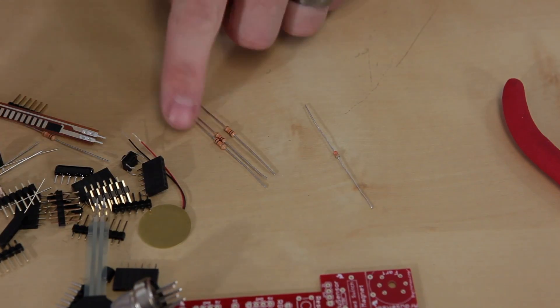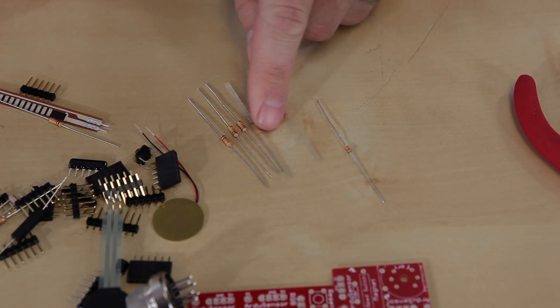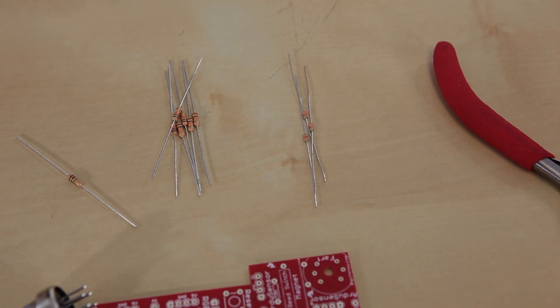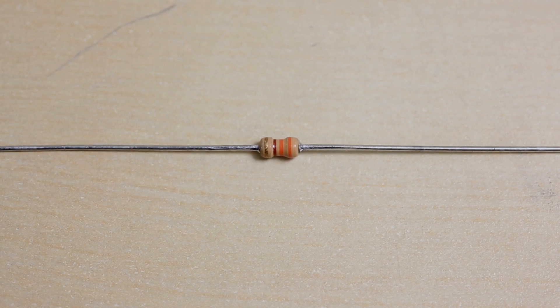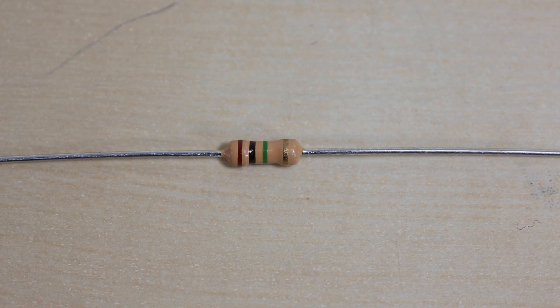What I'm going to do first is separate out the resistors by value. These all are going to be the 10Ks, and the 10Ks are brown, black, orange, and gold. Then we've got the 330s, these are the smaller ones, and then we've got a single one mega-ohm that will go with the piezo sensor.